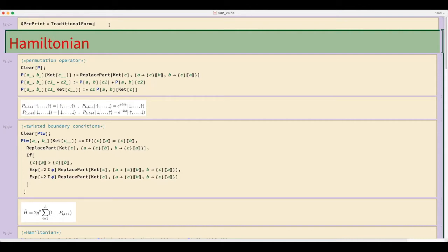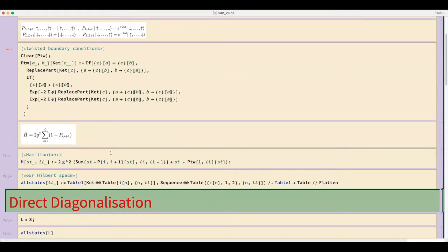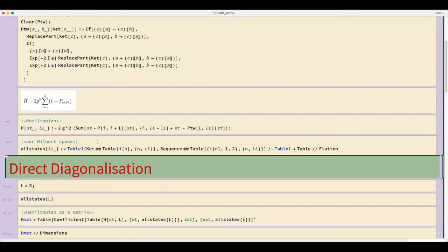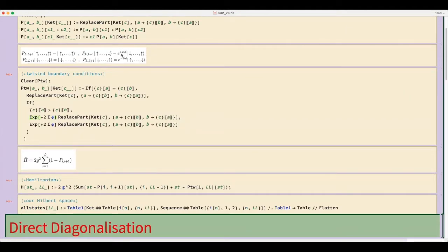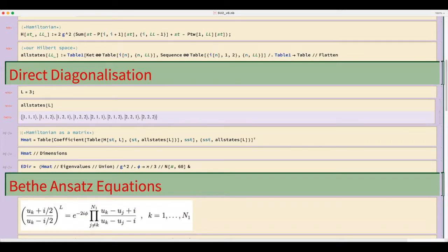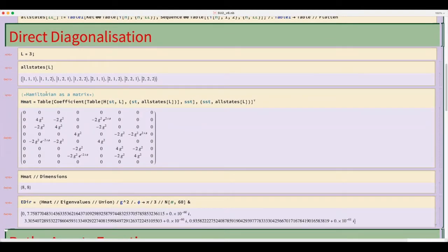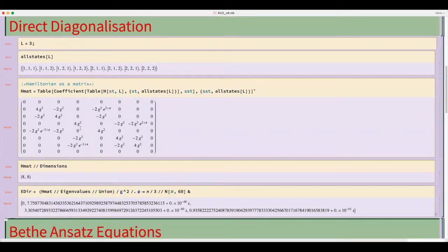Now, this wouldn't be a video involving me if there weren't some Mathematica. So, let's get to some programming. Here, I've just programmed the permutation operator, some twisted boundary conditions, the Hamiltonian, and our Hilbert space. I've introduced these twisted boundary conditions here involving this twist phi for technical purposes. Next, we proceed with direct diagonalization of the Hamiltonian of a length 3 SU(2) spin chain. So, let me set the value of the length here. Here is our Hilbert space. The Hamiltonian itself. It's an 8×8 matrix. And as you can see, there are three distinct excited state energies.